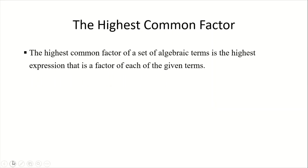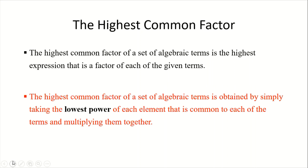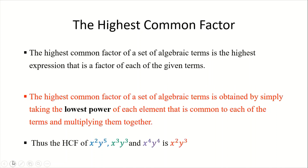The highest common factor of a set of algebraic terms is the highest expression that is a factor of each of the given terms. It is obtained by taking the lowest power of each element that is common to each of the terms and multiplying them together.